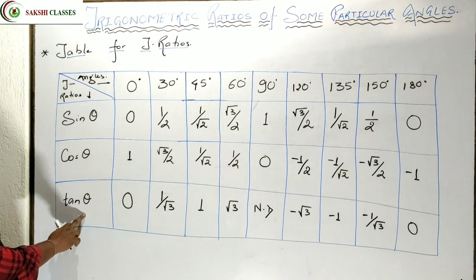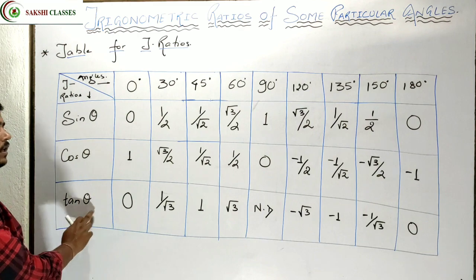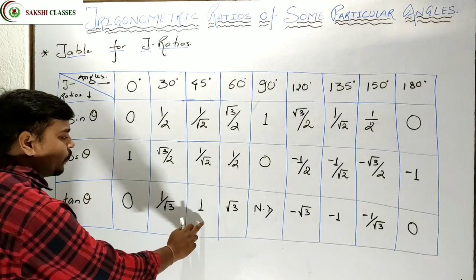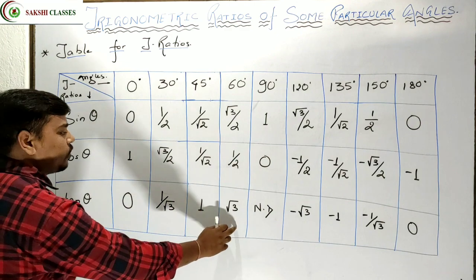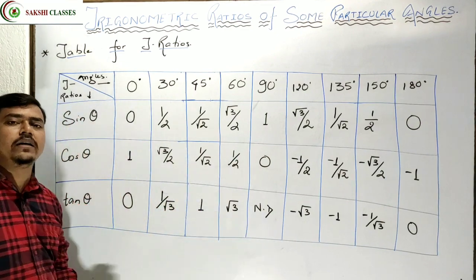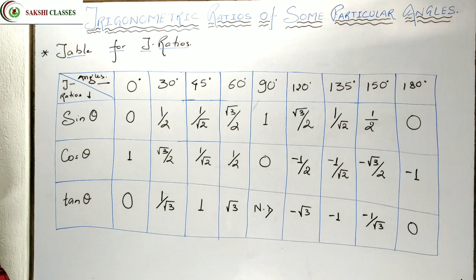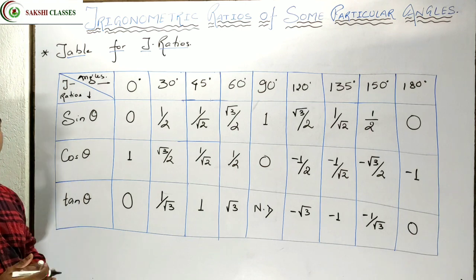For tan: tan 0° is 0, tan 30° is 1/√3, tan 45° is 1, tan 60° is √3, and tan 90° is not defined. Tan 90° is not defined — we don't have a value for it.